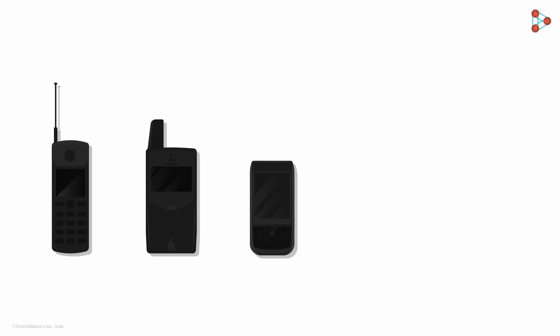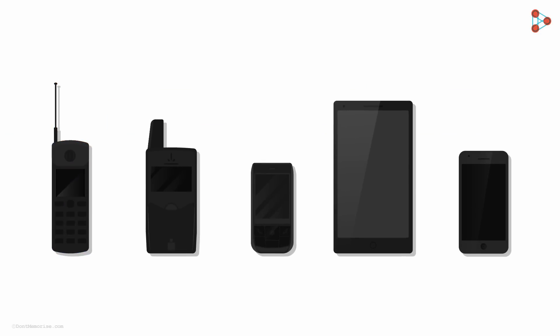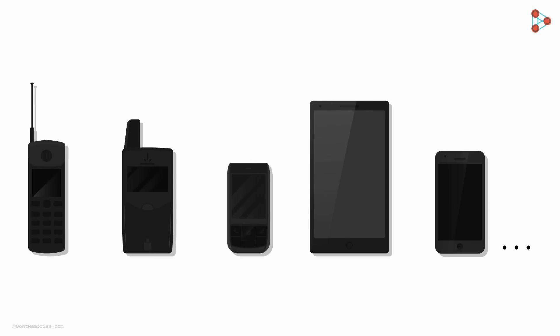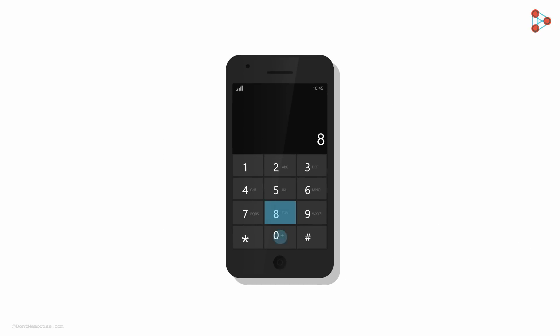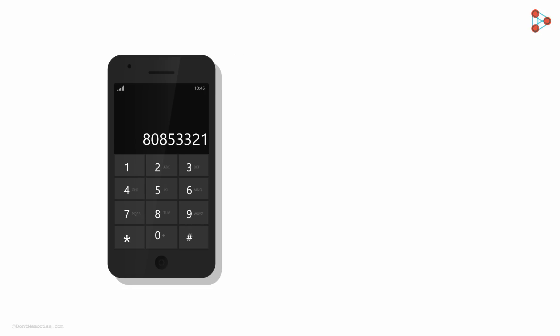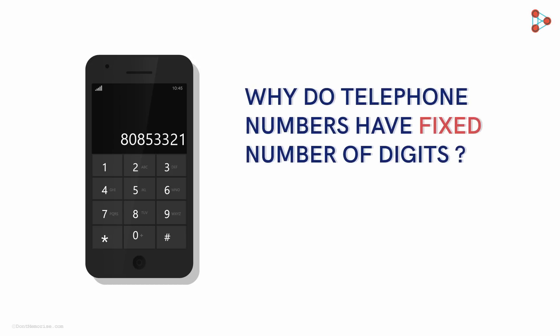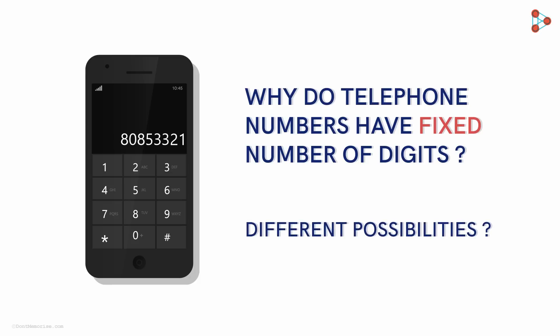Evolution in mobile phones in recent years has significantly changed how we perceive things. We are definitely going to see even more advancements in the coming years. But one thing that has remained constant for a very long time is that we still have to dial a fixed number of digits for making a phone call. And this leads us to a curious question: why do telephone numbers have a fixed number of digits? How is it decided? And how do we get different possibilities? Let's understand that in this Q-Pisode of Q-Box.